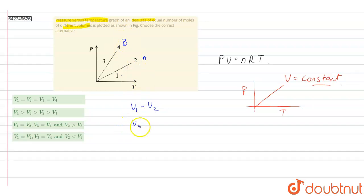Now, to get the relation between V2 and V3 or V4 or V1, let me rewrite the ideal gas equation here. I can say that P will be equal to nRT by V.